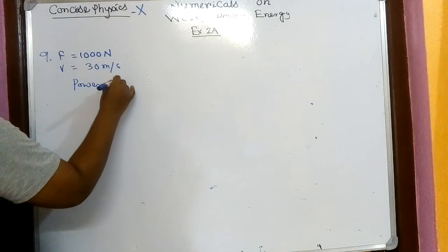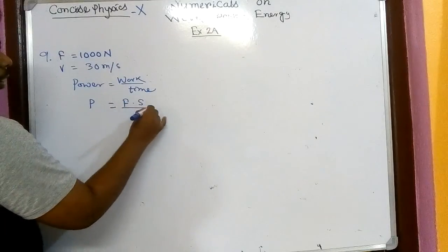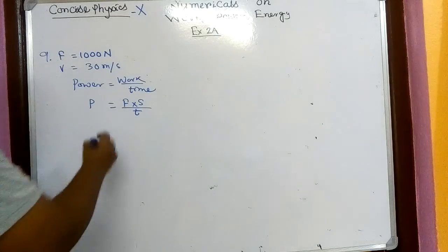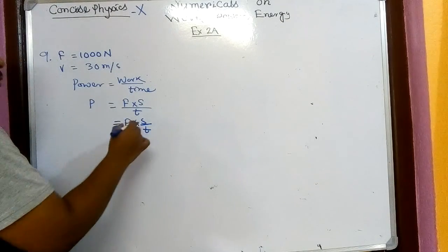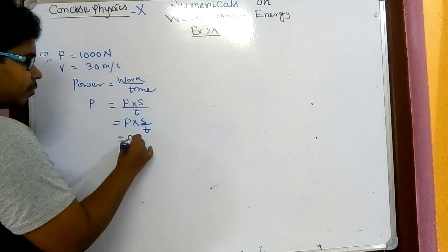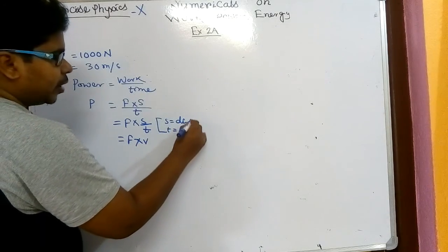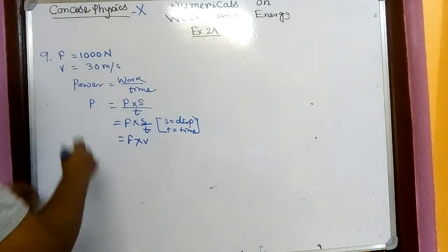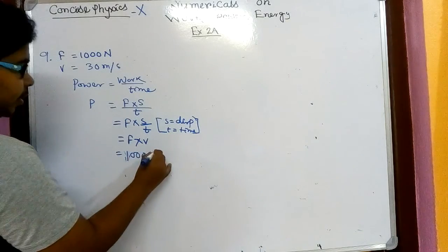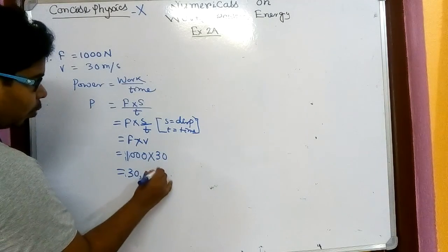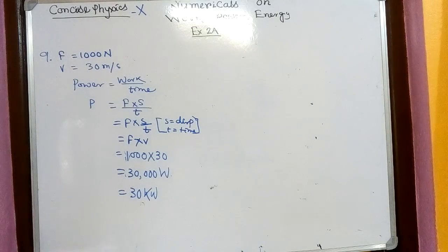If I'm talking about power, we know power P equals work by time. Instead of work we can write F dot S, so P equals F into S by T. Here S by T means displacement upon time, which is velocity. So power equals F into V. F is given as 1000 and V is 30, so it is 30,000 watt or 30 kilowatt. That is the power generated by the ox.